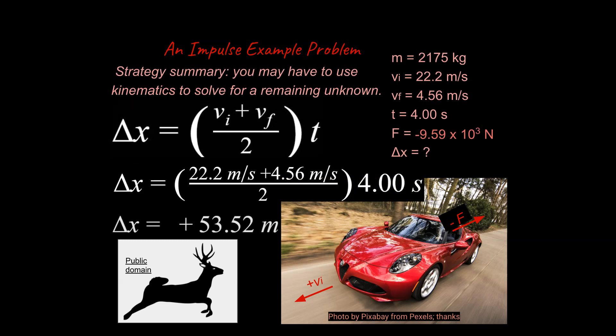Notice I've labeled this as a positive 53, and that's to give us the idea that we're moving in the forward direction. I do want to summarize the strategy here: after you do everything we have been doing throughout the year, you may also need to use kinematics to solve for remaining unknowns.